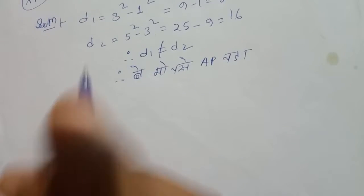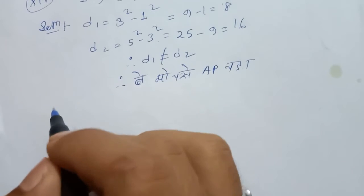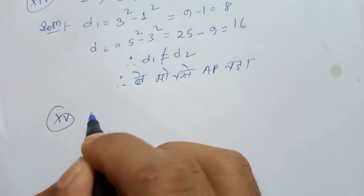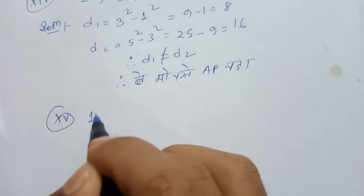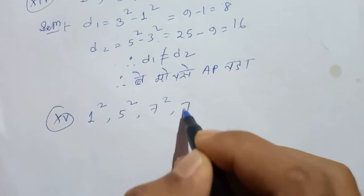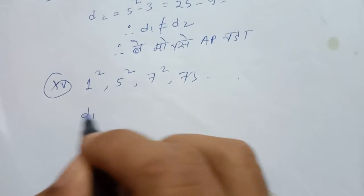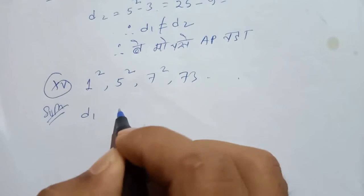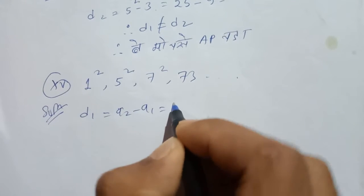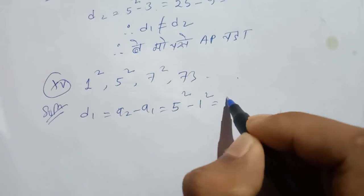Since it was 5.1, we will do the last question. The sequence is: 1 square, 5 square, 7 square, and 73 by 1 square. D1 is equal to A2 minus A1.